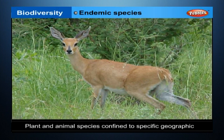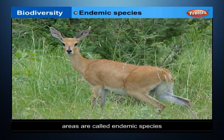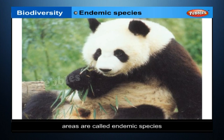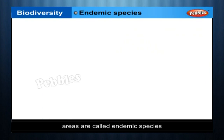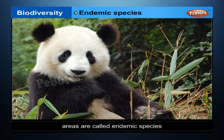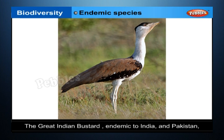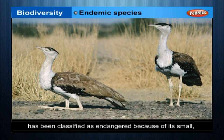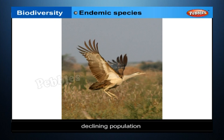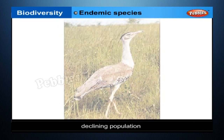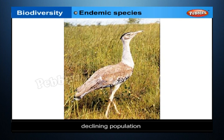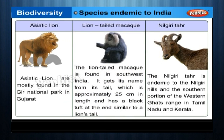Plant and animal species confined to specific geographic areas are called endemic species. The mountainous region of southwest China is the giant panda's only natural home. The great Indian bustard, endemic to India and Pakistan, has been classified as endangered because of its small, declining population. India contains globally important populations of some of Asia's rarest animals.